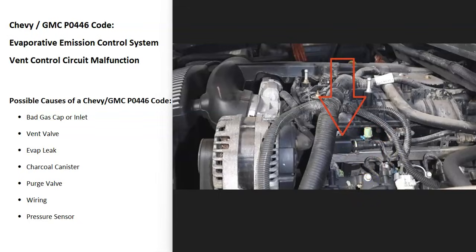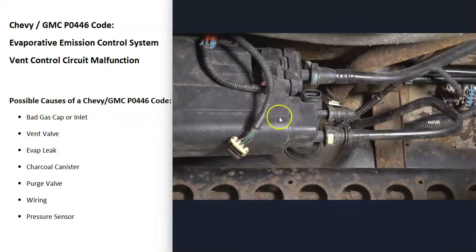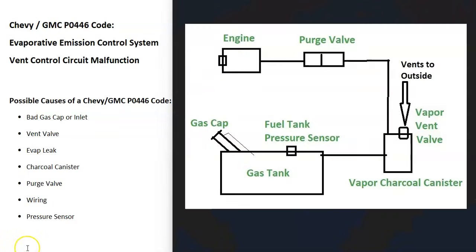Also keep in mind that anything wrong with the wiring — opens, shorts, bad connections — going to any of these components will cause the same symptoms as a bad component, so be sure to keep that in mind. If you check everything and it all tests good — the vent valve, the purge valve, no leaks, nothing else going on — then the next thing to check is the fuel tank pressure sensor. This sensor reports back to the computer what's going on inside the system, and if it fails, there may be no actual issue but the computer thinks there is because the sensor sent bad data.